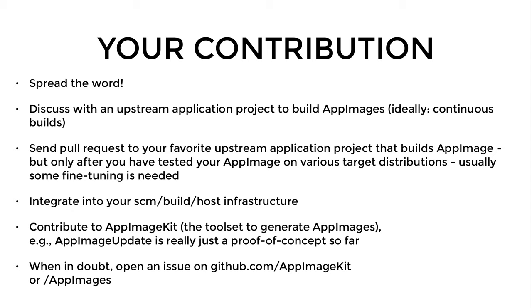If you want to get one step further, send a pull request to your favorite upstream application project that builds an AppImage — but please only do so after you have tested your AppImage on various target distributions, since usually some fine tuning is needed until the AppImage runs satisfactorily on all distributions. You could also integrate AppImage into your build host infrastructure and source control management system — something like the GitHub, Travis, Docker, and Bintray workflow I described.